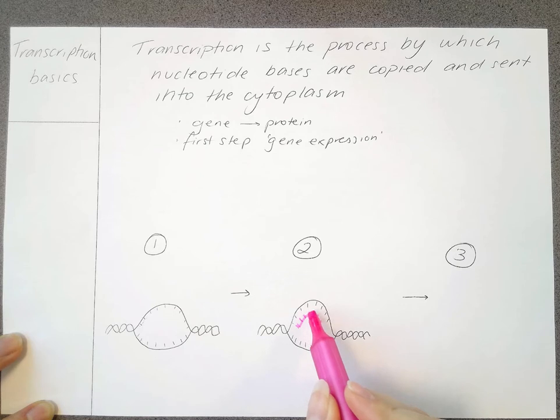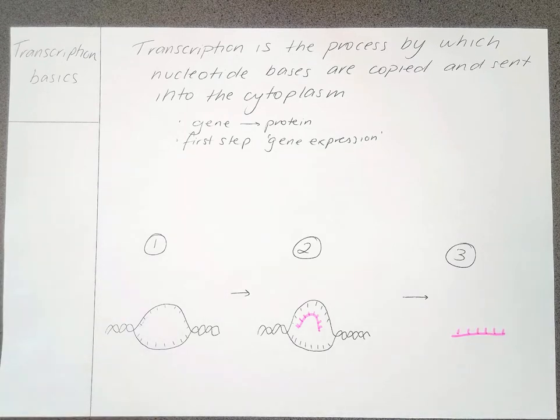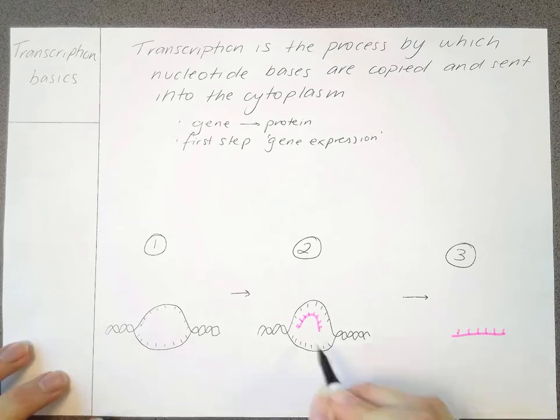They start to add together and these will coincide or complement the base pairs that are on that part of the strand, and then eventually that piece of RNA which has been built gets sent out of the nucleus.